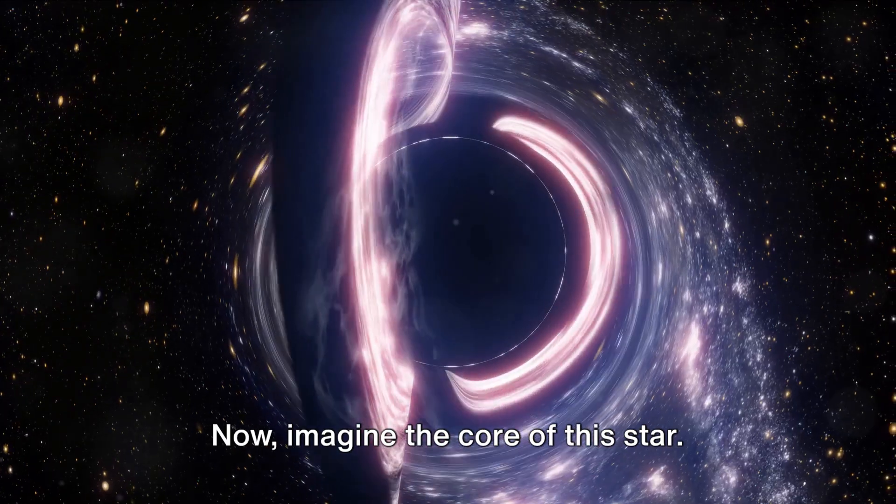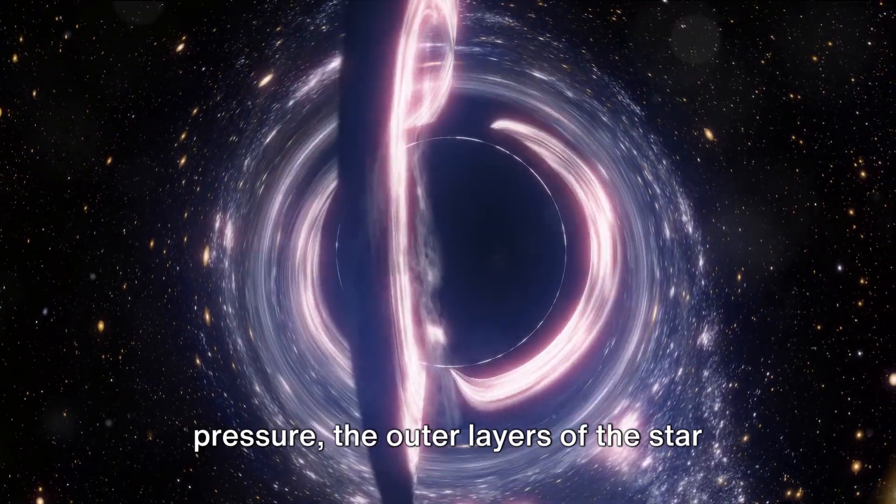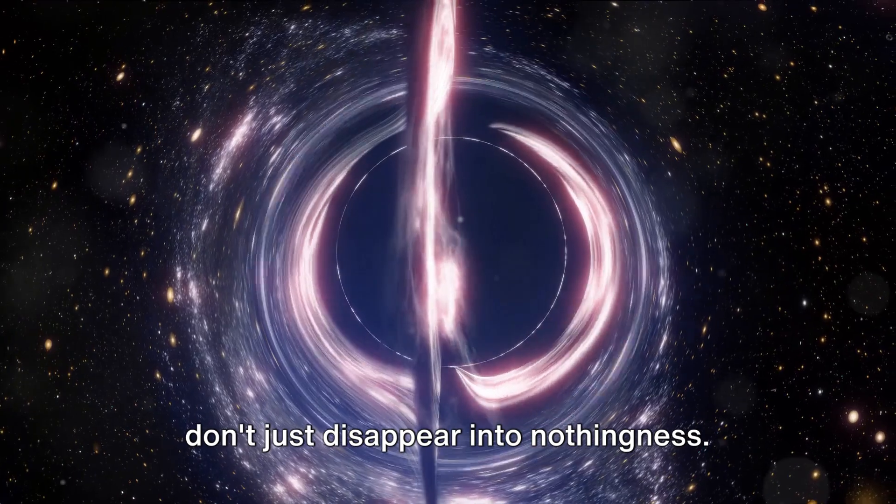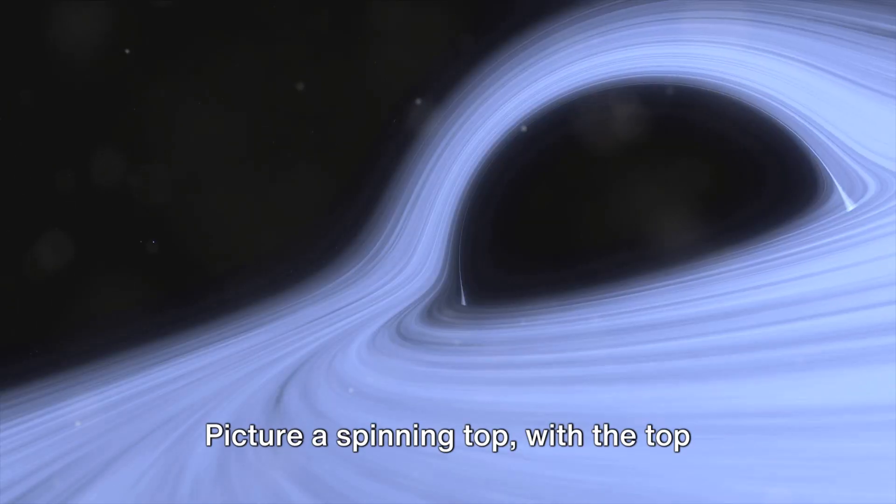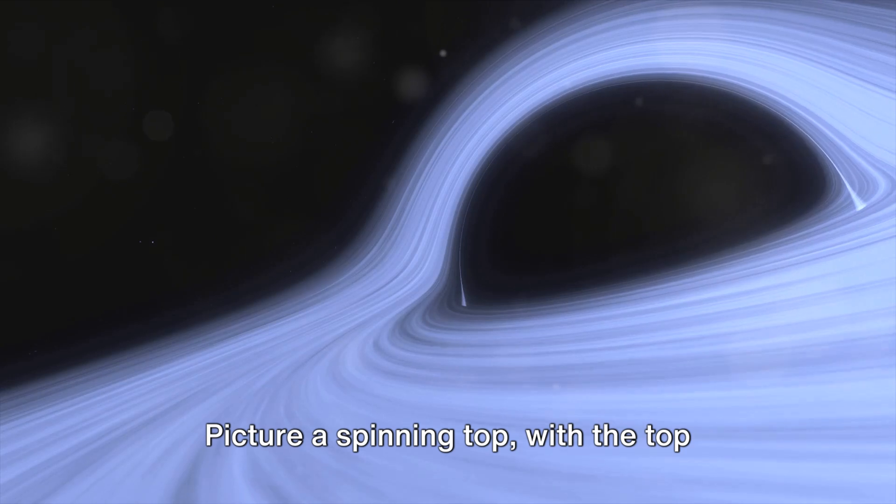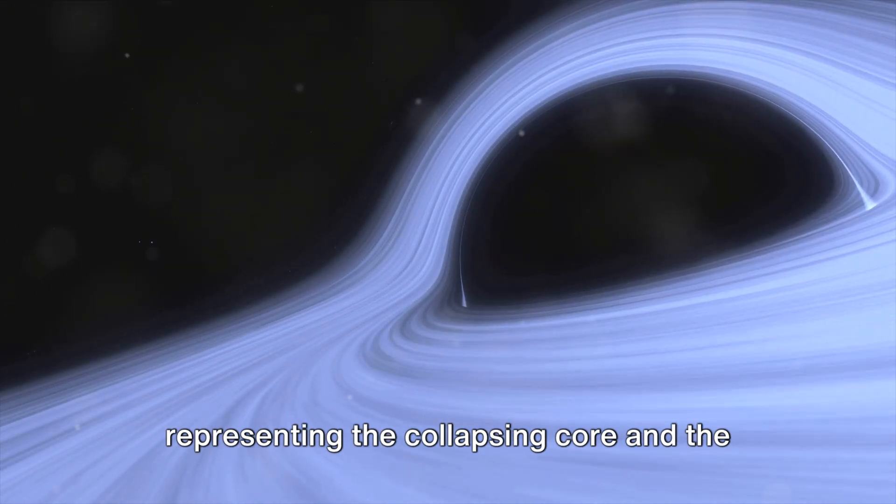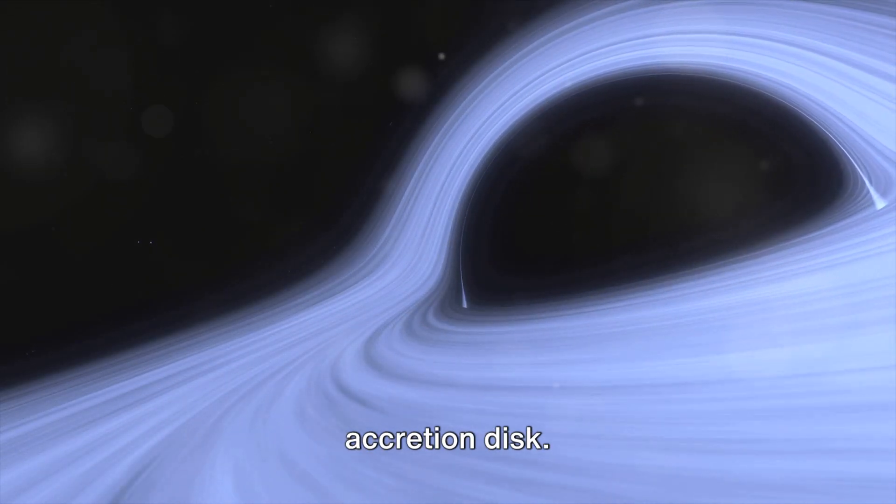Now imagine the core of this star. As it collapses under the immense pressure, the outer layers of the star don't just disappear into nothingness. Instead, they form what's known as an accretion disk. Picture a spinning top, with the top representing the collapsing core and the surrounding spin representing the accretion disk.